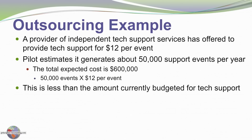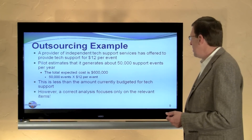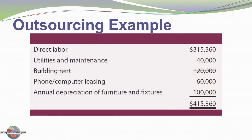The tech support service is offering to charge $12 per tech call. With about 50,000 tech calls a year, the total cost of outsourcing would be $600,000. At first glance you might say $600,000 is less than the $635,000, but that would be the wrong analysis. We need to drill down and recognize that building rent and furniture and fixture depreciation will continue regardless. We'll avoid the labor and computer leasing, among other things. The relevant avoidable items total $415,360. Why would we spend $600,000 to avoid only $415,000? So we're better off continuing to provide our own tech support.